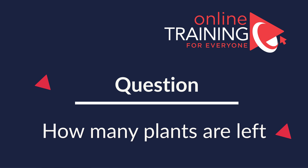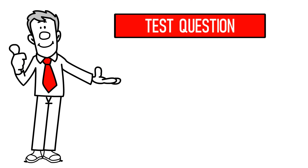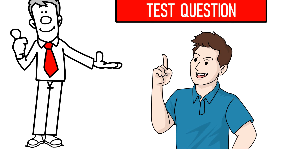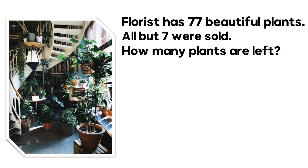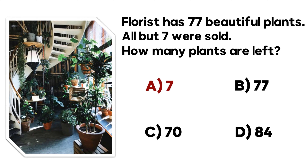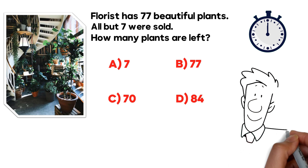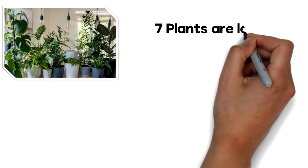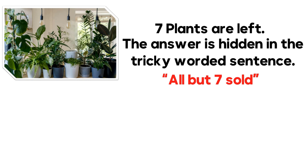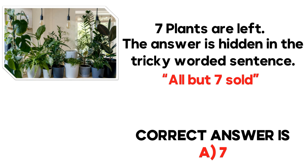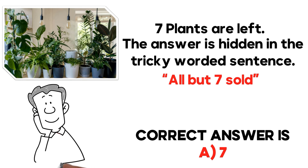Here's a simple but very tricky question which tests your math skills and attention to detail. A florist has 77 beautiful plants — all but seven were sold. How many plants are left? Choices: A) 7, B) 77, C) 70, D) 84. The answer is hidden in the cleverly worded sentence: 'all but seven were sold.' So the correct answer is choice A: seven plants are left.